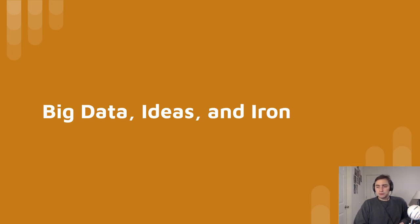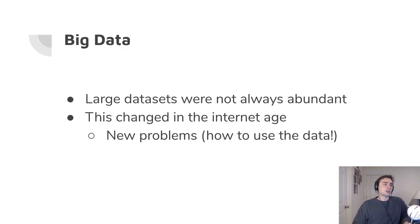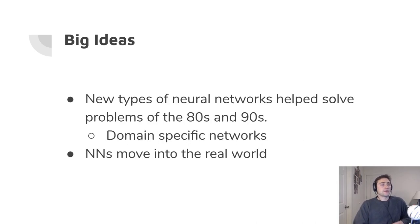We can basically segment these ideas into big data, big ideas, and big iron, iron referring to the hardware. So with big data, what we're talking about these large data sets, and these weren't always abundant, especially in the very early days of neural networks and machine learning. But as we've moved into the internet age, suddenly this is less and less of a problem. And we have new problems such as now that we have so much data, what do we actually do with it? So now we actually have an abundance of data.